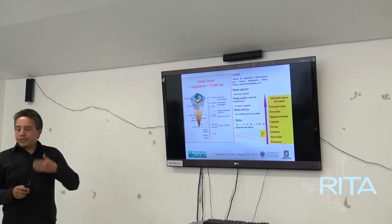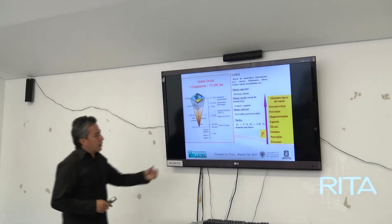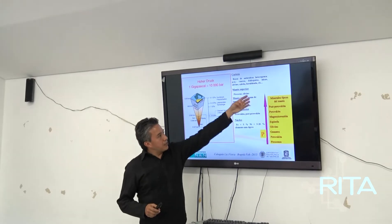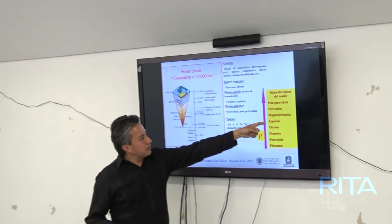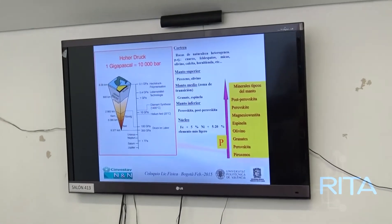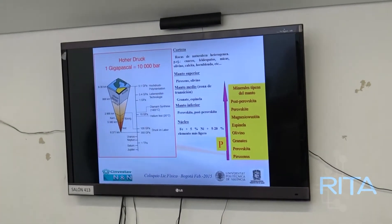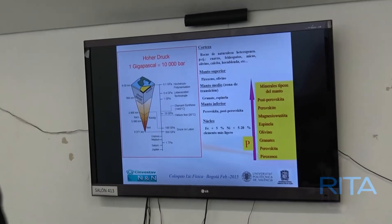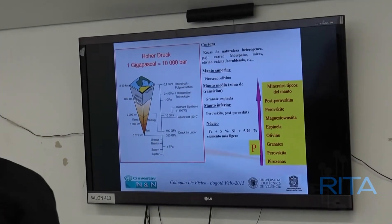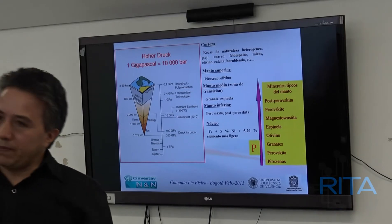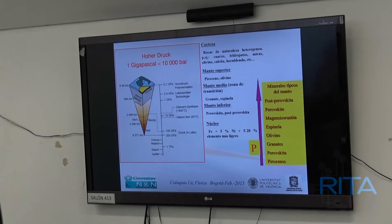A medida que la presión aumenta tenemos piroxenos, perovskitas, olivinos, espinelas, perovskitas, post-perovskitas. ¿Cuál es el interés general de las perovskitas? Son materiales muy abundantes en la Tierra y tienen demasiadas propiedades: unos son semiconductores, otros son metálicos, otros son superconductores. De sus propiedades derivan aplicaciones; por ejemplo, los fuselajes de los transbordadores espaciales están hechos con perovskitas superconductoras, porque cuando el transbordador ingresa a la atmósfera la temperatura es muy alta y el material aísla térmicamente el interior.